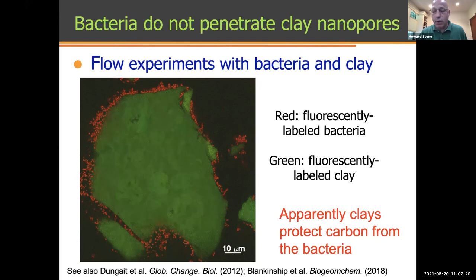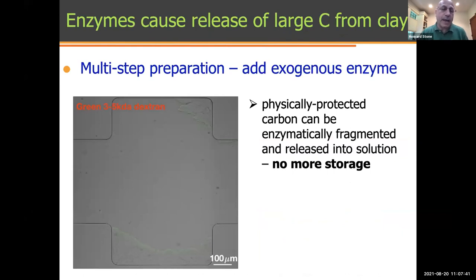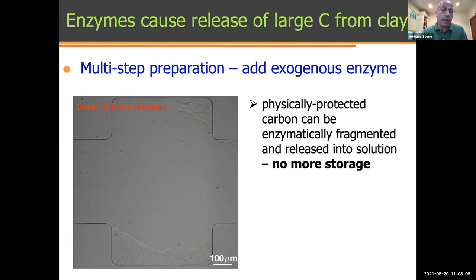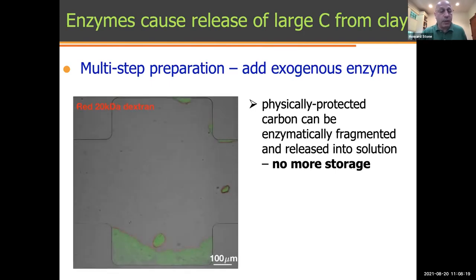If you just looked at this image, you might say that clays apparently protect carbon from the bacteria because they can't get into the pore space. We then recognize that there are issues with this because the bacteria can produce enzymes that can break down different molecules. So we did an experiment in a microfluidic chip shown here on the left. We're going to first flood it with molecules of different molecular weight, then flood it with water, and then flood it with an enzyme that breaks down dextran and glucose.